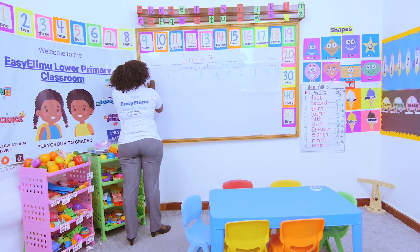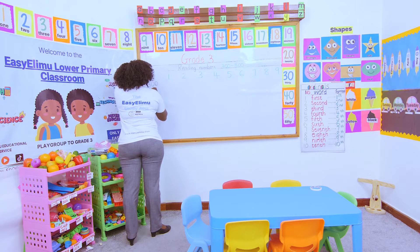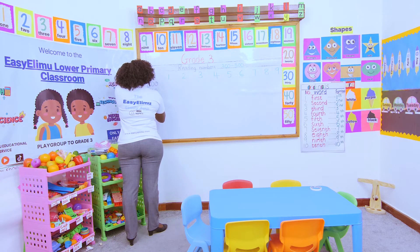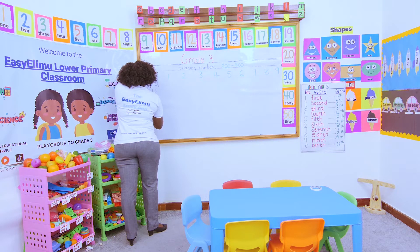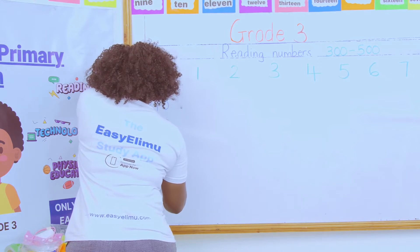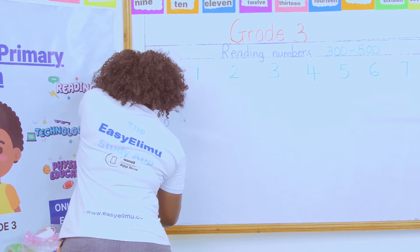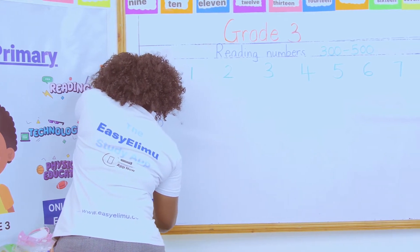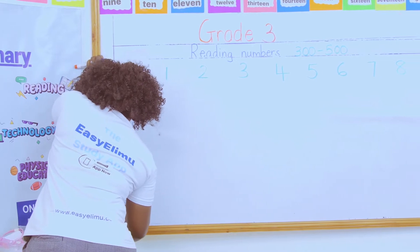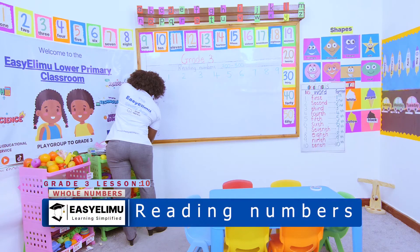Now our number here is 300, and the way we have just seen cannot go. 300 goes with 310, 320, 330, 340. Are you following what I'm doing? 350, 360, 370, 380, 390, and the last number here will be 400.